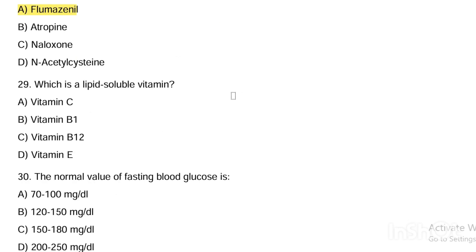Next question. Which is a lipid-soluble vitamin? Option A, vitamin C. Option B, vitamin B1. Option C, vitamin B12. Option D, vitamin E. Answer: lipid-soluble vitamin is Option D — vitamin E. Fat-soluble vitamins are A, D, E, K; water-soluble vitamins are vitamin C and B-complex (B1, B2, B12).